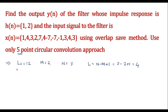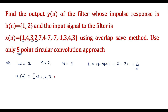In the overlap and save method we have to divide x[n] into different sub-blocks such that each sub-block consists of 5 samples. So let x1[n] be the first sub-block, which consists of m-1 zeros — here m equals 2, so m-1 equals 1 — so it has 1 zero followed by L samples of x[n]. Since L equals 4, we take the first 4 samples of x[n]: 1, 2, 3, 4.